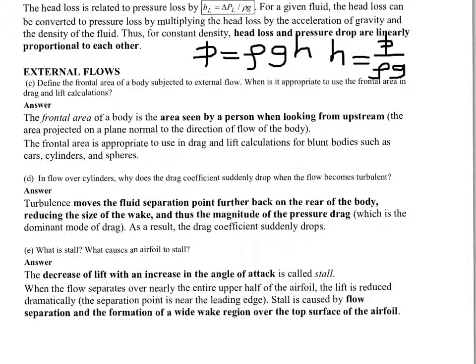Where is it appropriate to use frontal area in drag and lift calculations? The frontal area of a body is the area seen by a person looking at upstream—the area projected on a plane normal to the direction of flow of a body.